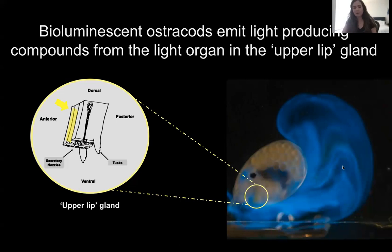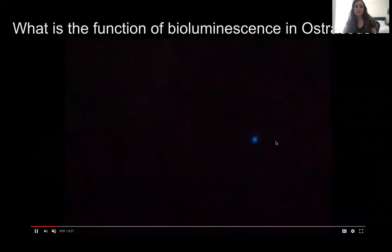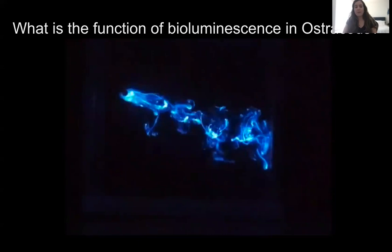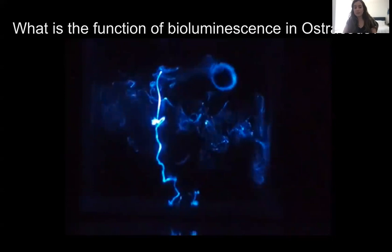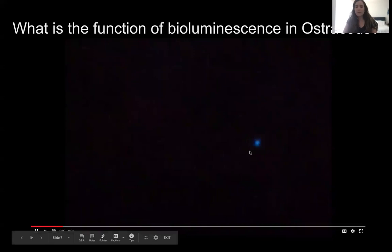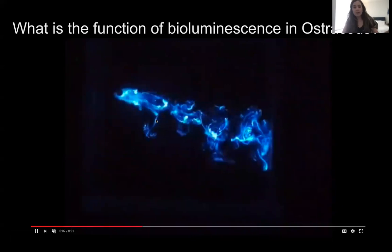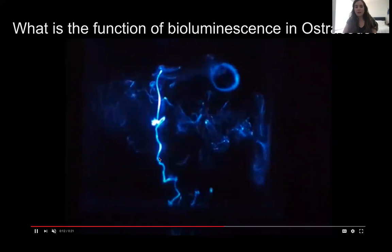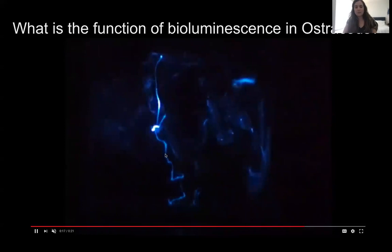The ostracod secretes the luciferin and luciferase separately, and the reaction occurs extracellularly outside in the water to produce bioluminescence. Bioluminescence is used for defense, and some tropical ostracods also use it for courtship signaling. Here you can see a bioluminescent ostracod that was swallowed by a cardinal fish — it spews out bioluminescence, the cardinal fish lets it go, and you can see the ostracod escaping with a bioluminescent trail. Really, really cool.